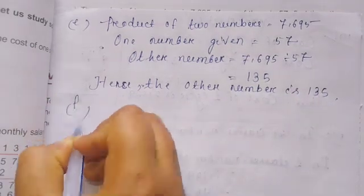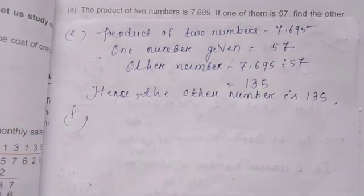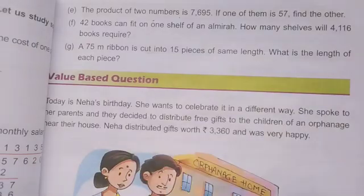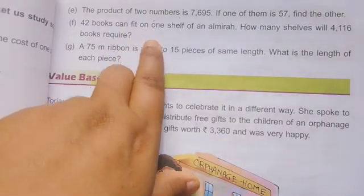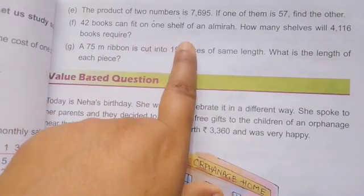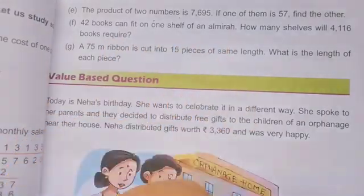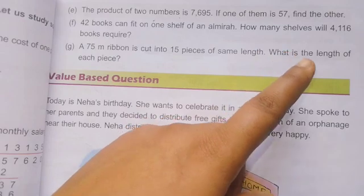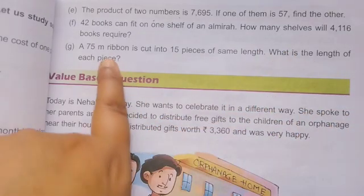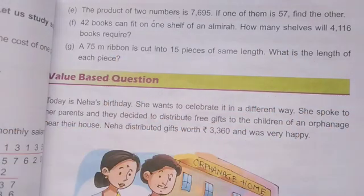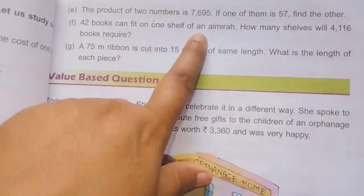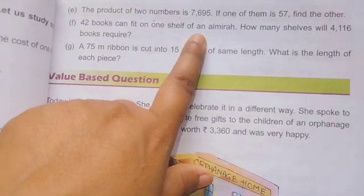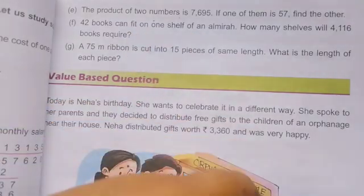Now solve F. 42 books can fit on one shelf of an almirah. How many shelves will 4,116 books require? First I write: Number of books in one shelf equals 42.